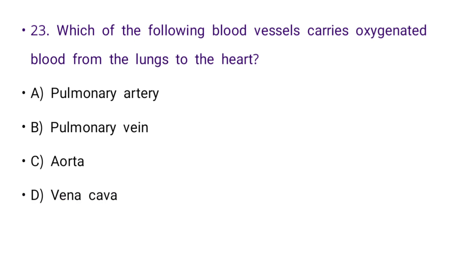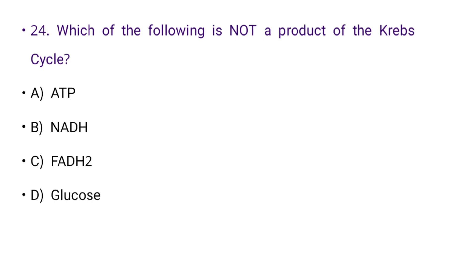Next: Which of the following blood vessels carries oxygenated blood from the lungs to the heart? Options: pulmonary artery, pulmonary vein, aorta, or vena cava. The right answer is B: pulmonary vein.